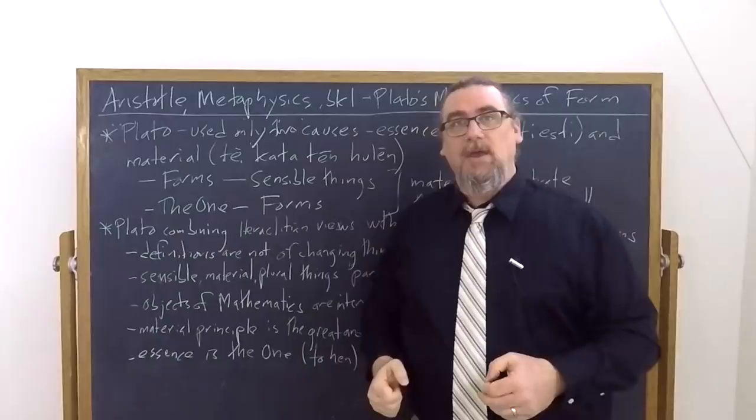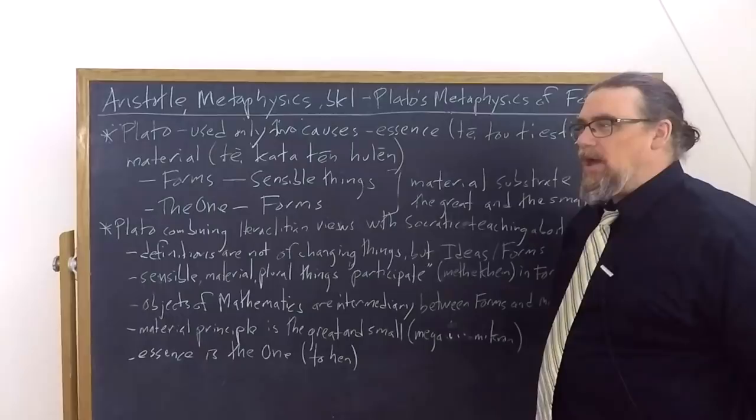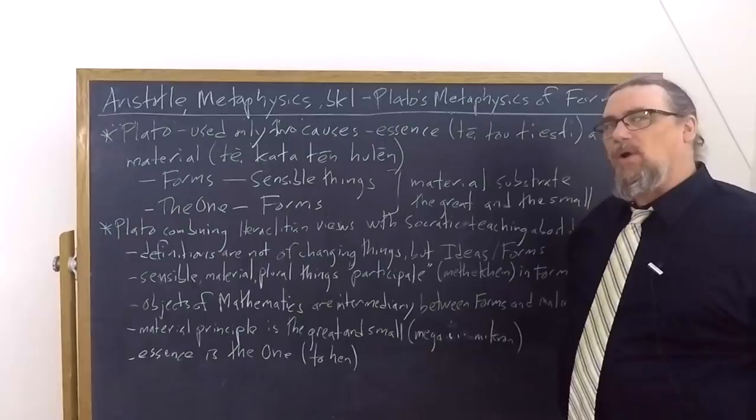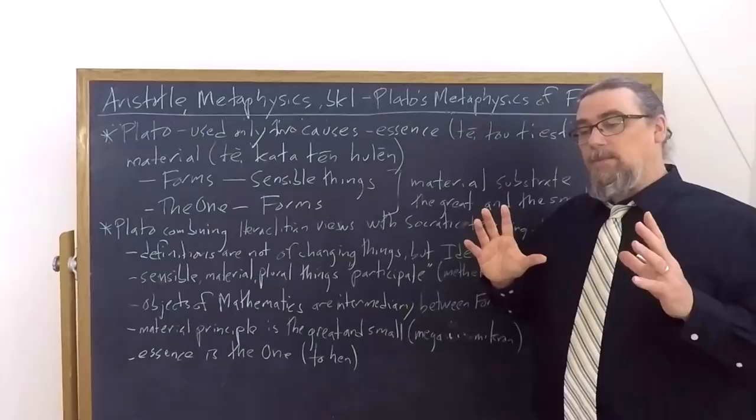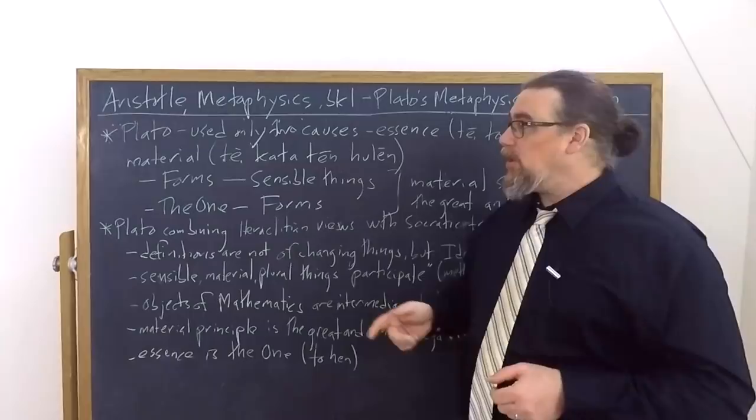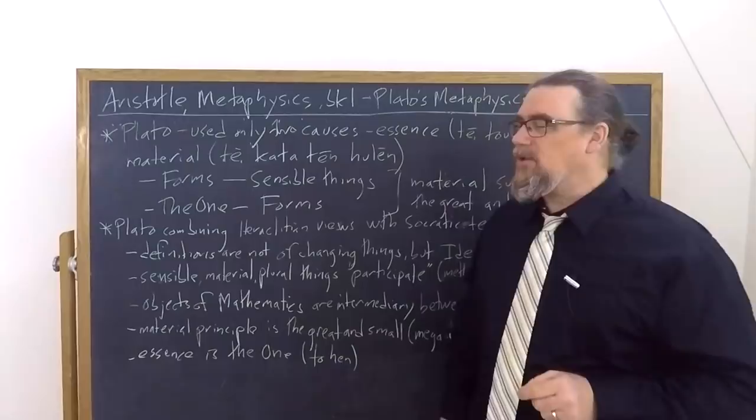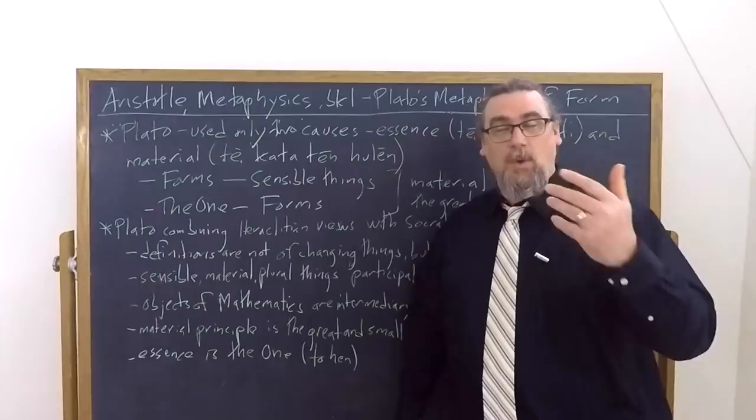This discussion comes towards the end of that short section that's entirely focused on Plato, although bringing up the Pythagoreans by way of contrast as well. He tells us that what Plato is doing applies on two different levels. We have what we're probably all familiar with from having heard about Platonism. We have the forms, and the forms are the formal cause for the sensible things, the many material plural things. And then we have the One, to hen, and that is in some way the formal cause for the forms.